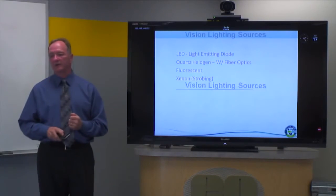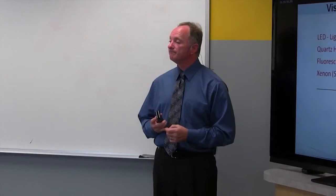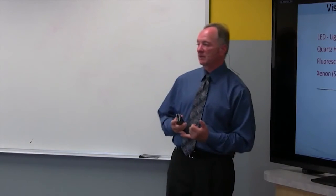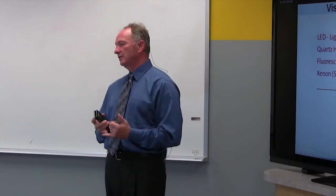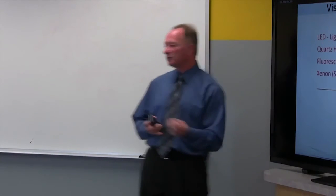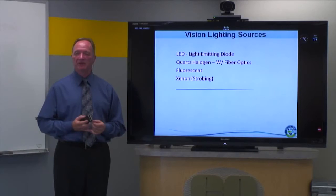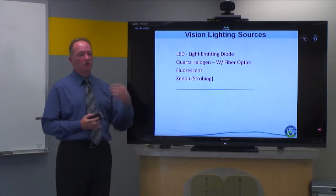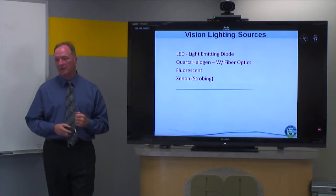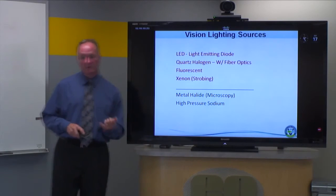Let's look at light sources. The common sources we use in machine vision are LED, quartz halogen, fiber optics, fluorescent, and xenon — which is mostly used for strobing because it's extremely intense and can be driven hard. My presentation is LED-centric, but a lot of the techniques I'll show can be applied to these other sources as well.